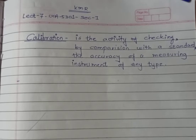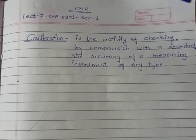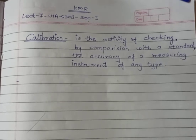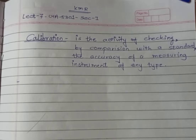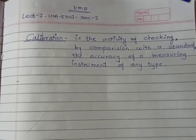Our next point is calibration. Calibration means it is a checking of correctness, or it is an activity of checking where the result is compared with a standard substance. It is also called as the checking of the accuracy of a measuring instrument of any type.